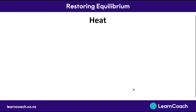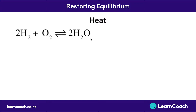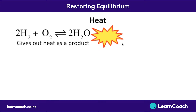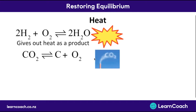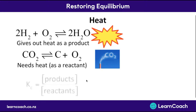There are two other applications of this as well. The first is heat. If we have a reaction where hydrogen and oxygen join to make water, heat is given out as part of the reaction, so we can think of heat as being a product. Conversely, if we're breaking apart carbon dioxide into carbon and oxygen, that reaction needs heat, so we can think of heat as a reactant in that case.